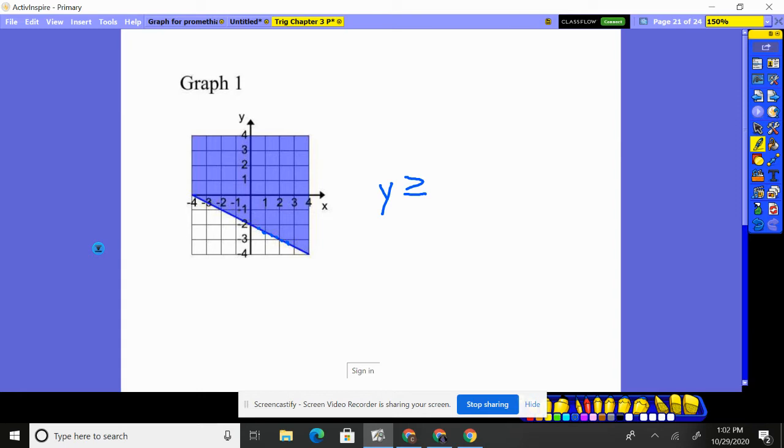Now, all I need is the slope and the y-intercept. Well, we can see that the y-intercept is negative two. And then it seems to go up one over two, up one over two. So that's a half, so we put a half x.